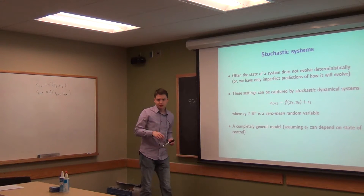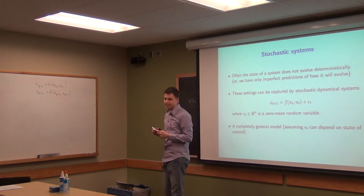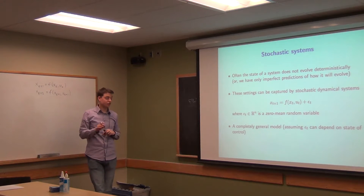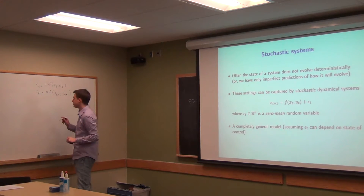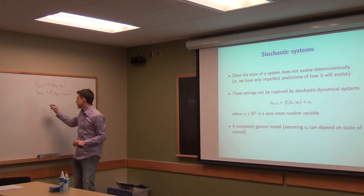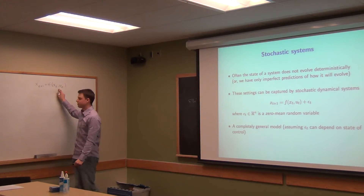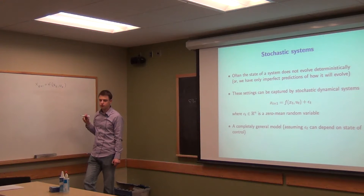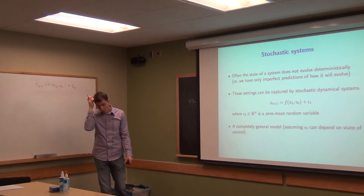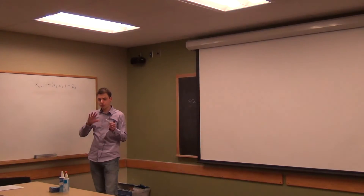I'm putting up a general model here. The basic model for a stochastic system — in discrete time, since continuous time requires stochastic differential equations which involve a lot of notation — is to say that the next state is given by this same function of the dynamics, f of x_t and u_t, plus some noise term epsilon_t. We haven't talked too much about probability in this class, so I'm going to keep this at a high level.